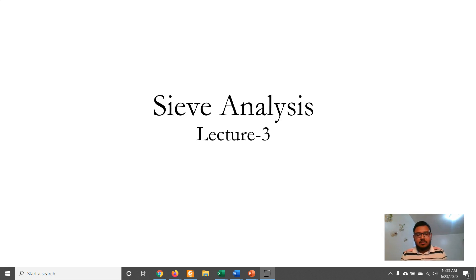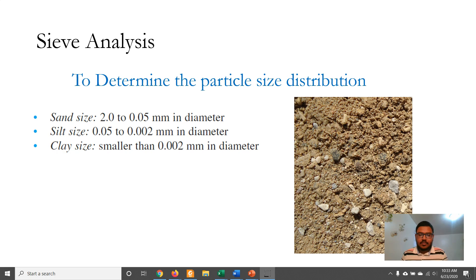Sieve analysis is a method by which we can determine the particle size distribution. Soil can be classified into many categories depending on particle size. Soil particles in range between 2 to 0.05 mm is known as sand particle. Silt is 0.02 to 0.002 mm in diameter and clay size is smaller than 0.002 mm in diameter.